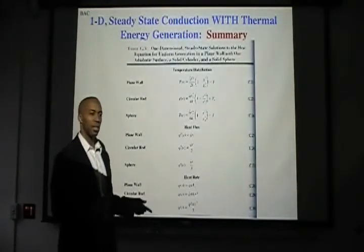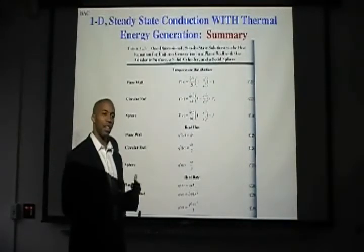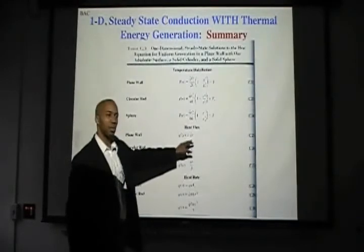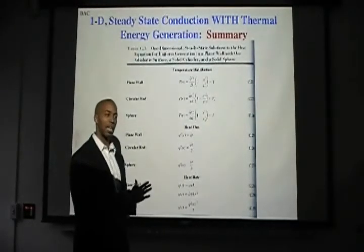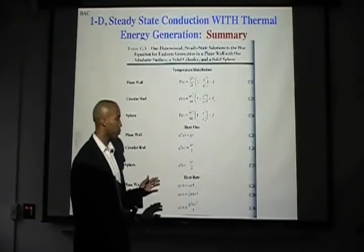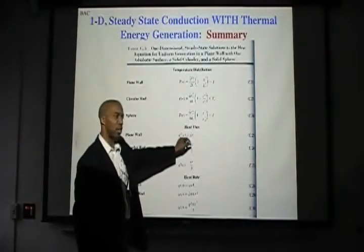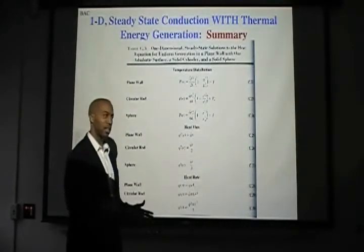So once again, to think about this in terms of where the energy has to go, Q̇ watts per meter cubed times X, a distance, is going to give the heat flux leaving the wall being equal to the amount of energy that was generated through that thickness of the wall.